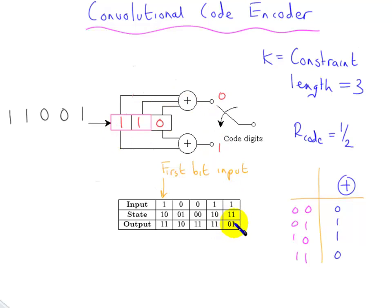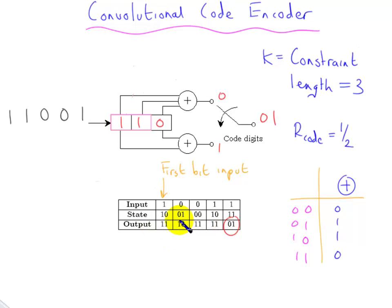And then we get the final code word: zero, one — which is being multiplexed, so the output is zero, one. This is the first code digit and this is the second code digit. This output sequence is influenced by the bits which enter — it's all intertwined, so this code word does not depend only on its corresponding input bit, but on the previous inputs as well. This is the first input, the second, the third, the fourth, and the fifth, and this code word depends not only on that but on this and this.